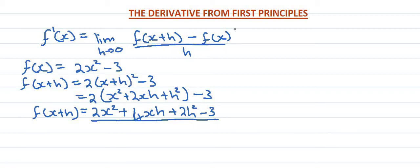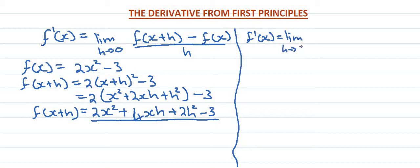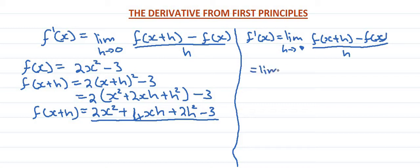So we can now differentiate using the formula. We have the formula before — substitute. So f prime is going to be the limit as h approaches 0 of f of x plus h minus f of x, all over h. So we substitute f of x plus h: 2x squared plus 4xh plus 2h squared minus 3.